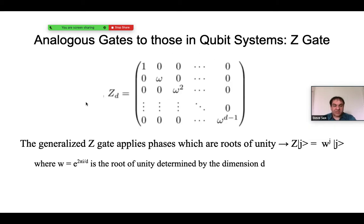The generalization of the Z gate is really a phase gate. It applies phases which are roots of unity to each state. That is, it applies powers of the phase e to the 2πi over d, where d is the dimension of the Qudit system. Note that when d equals 2, the phase becomes negative 1, and this reduces to the Z gate that we're familiar with in qubit systems.